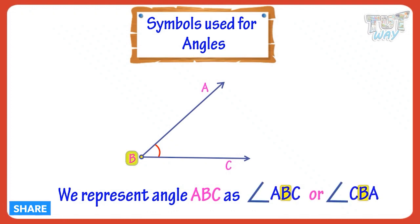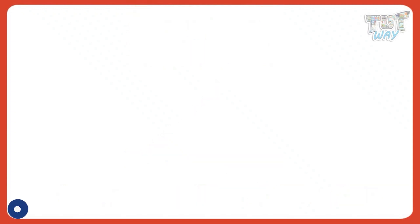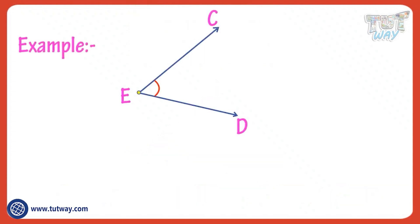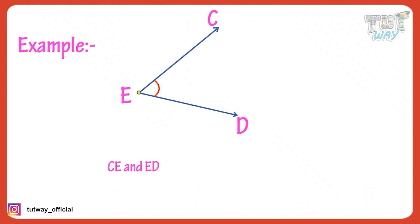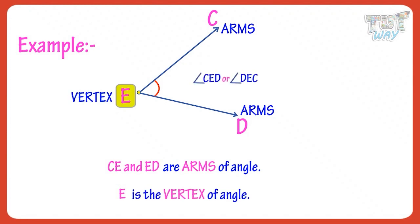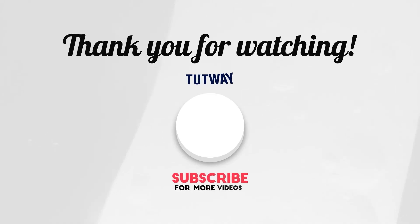Let's see more examples. Here CE and ED are arms of an angle, and E is the vertex, and CED is the angle represented like this.